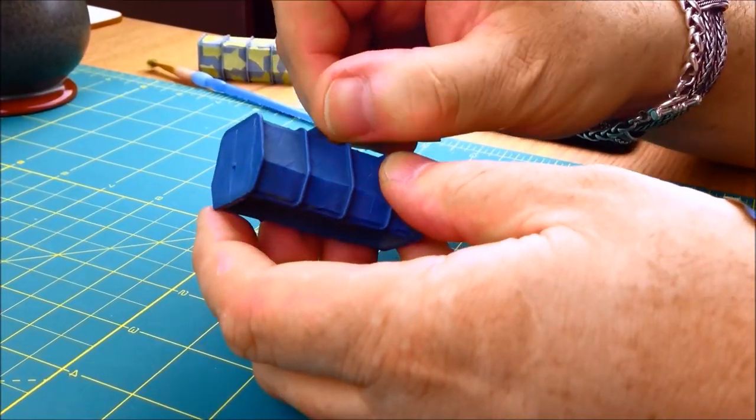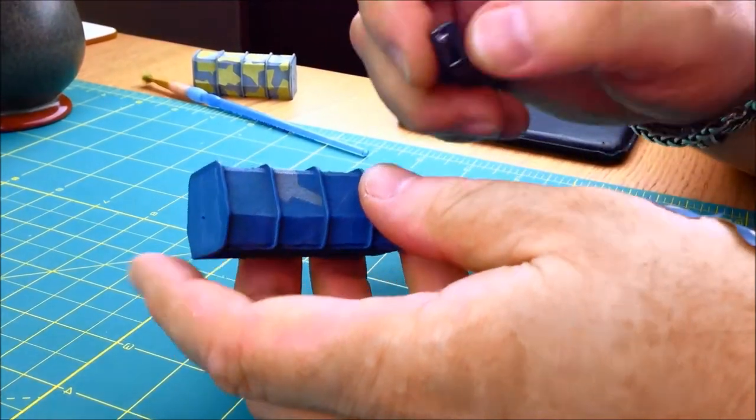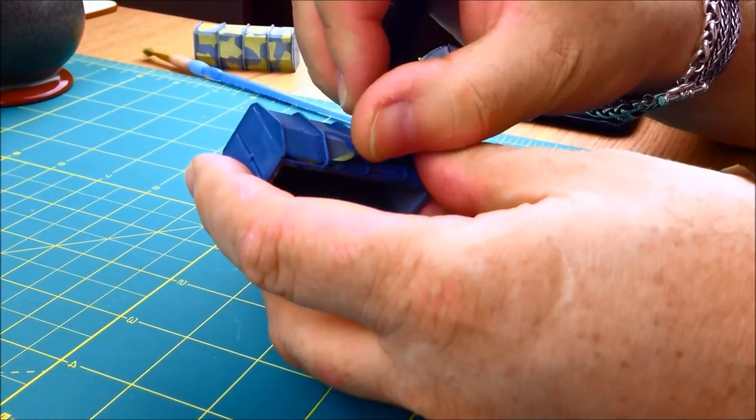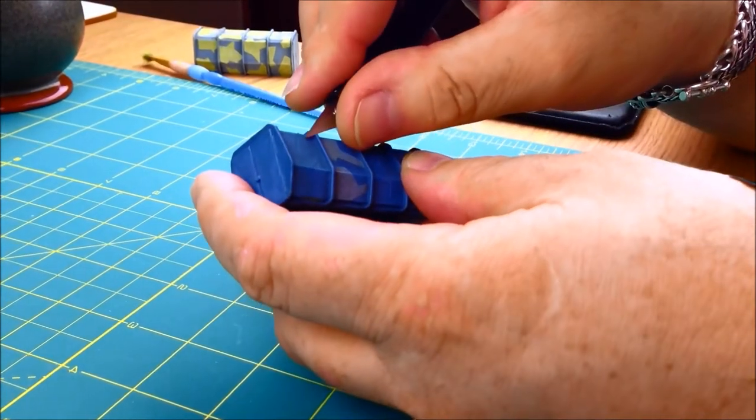So having given this miniature a couple of hours to dry, Dale is now back with the scalpel and simply peeling off each mask applied previously, revealing the wonderful splinter camouflage.